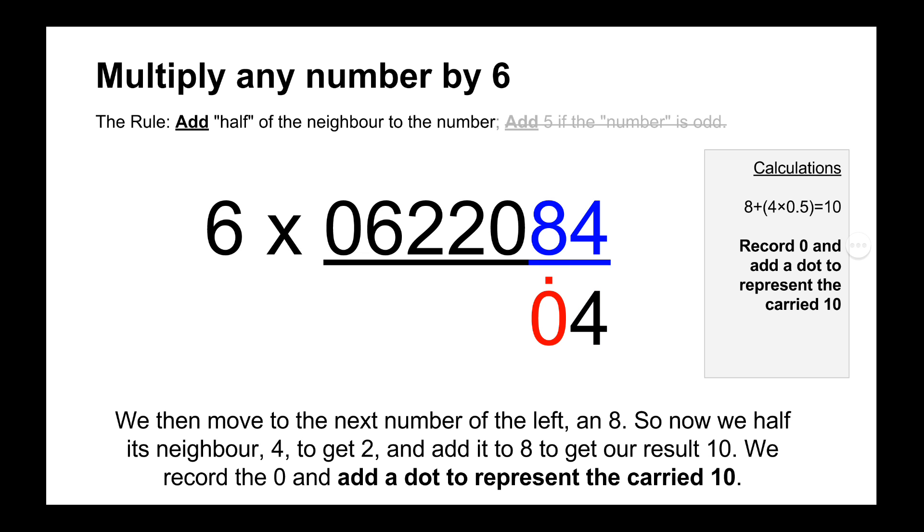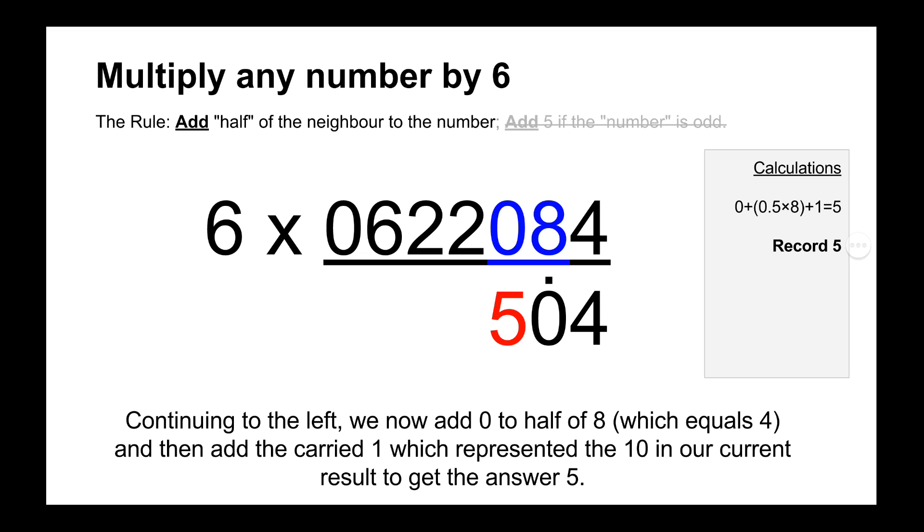And then moving on to the next number is 8. So we add 8 to half of 4, which is 2. So 8 plus 2 equals 10. So we record the 0 and add a dot above it to represent the carried 10. And then we move across to the next number, which is 0. So we simply do half of 8, which is 0's neighbour. And then we add that on to 0. And then we plus the dot from the previous answer. So half of 8 is 4 plus the dot equals 5. And we record the 5.